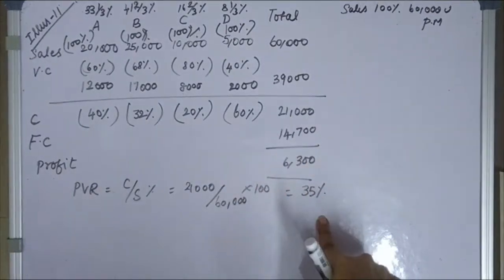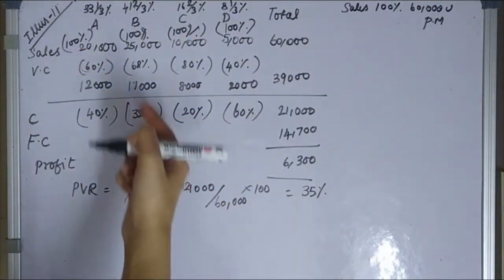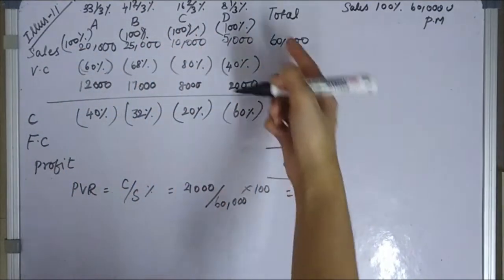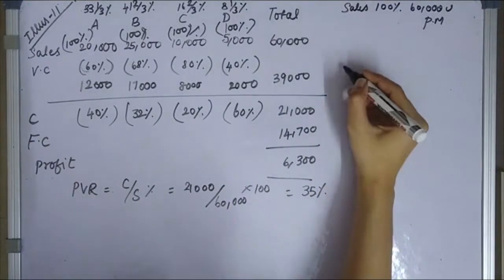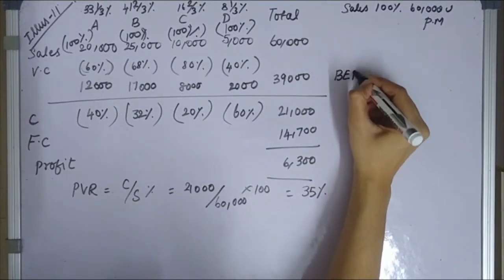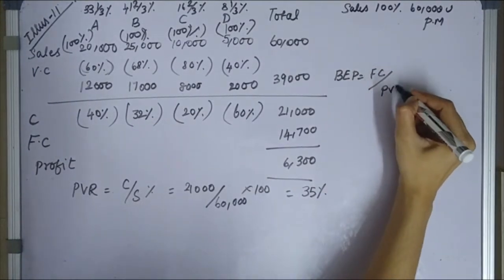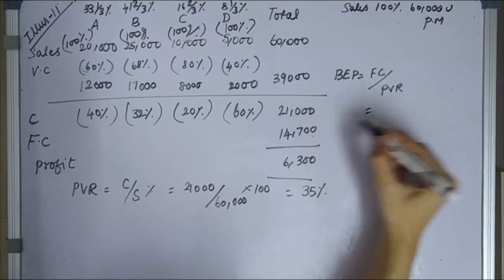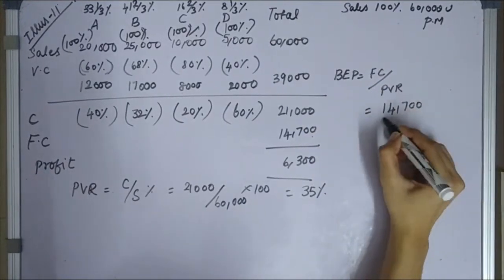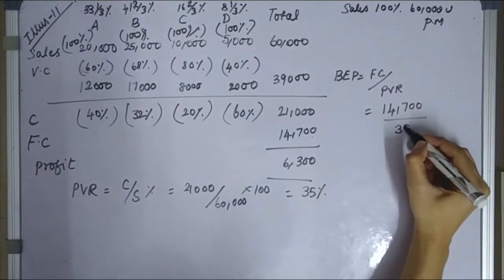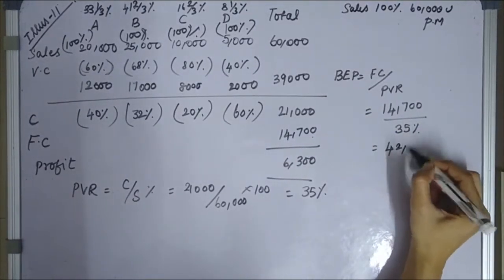Total individual contribution divided by total sales gives the overall PV ratio. BEP = fixed cost divided by PVR = 14,700 ÷ 35% = 42,000.